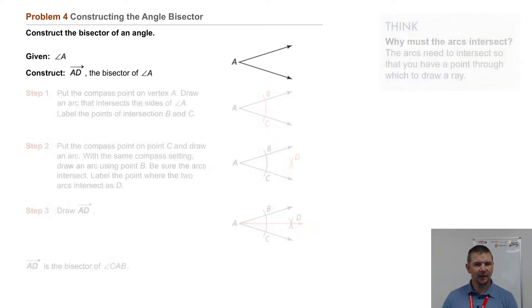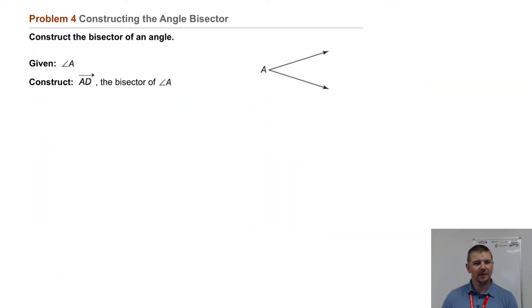Problem 4: Constructing the angle bisector. Construct the bisector of an angle. Here we're given angle A, and we are to construct ray AD, the bisector of angle A. Step 1: Put the compass point on vertex A. Draw an arc that intersects both sides of angle A.